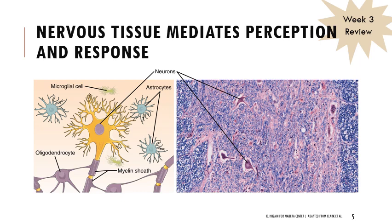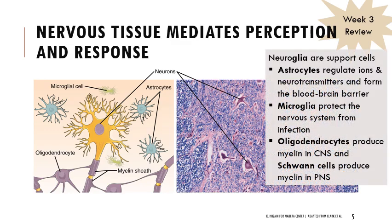Not all nervous tissue consists of neurons. There are neurons, but then there are also microglial cells, astrocytes, oligodendrocytes, and Schwann cells. We'll review those different structures and I'll talk about the function of each of them and what part of the nervous system they correlate with.